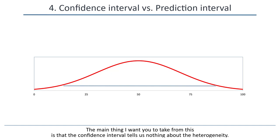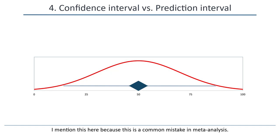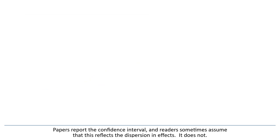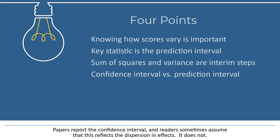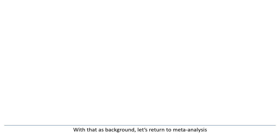The main thing I want you to take from this is that the confidence interval tells us nothing about the heterogeneity. I mention this here because this is a common mistake in meta-analysis. Papers report the confidence interval, and readers sometimes assume that this reflects the dispersion in effects. It does not. With that as background, let's return to meta-analysis.